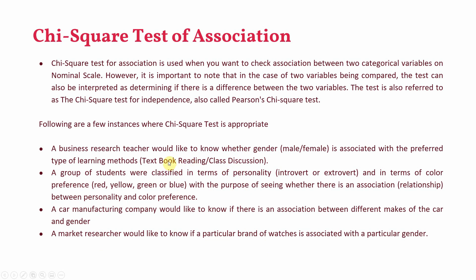There is no order in nominal scale categories. For example, gender — I've written it male and female, but you could write it female or male. Learning methods: textbook reading then class discussion, or the other way around. Same for color — red, yellow, green, or blue could be written in any order. A variable on nominal scale will only have categories with no order. There is a video on scales of measurement on the channel if you want more detail.